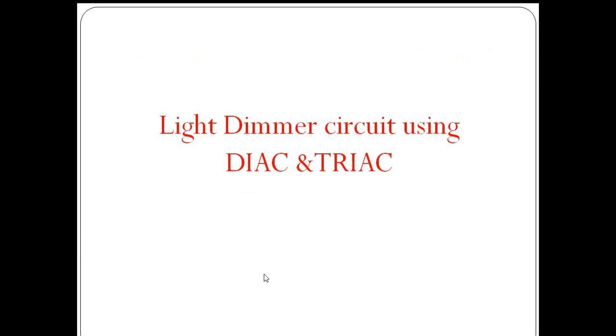A light dimmer changes the intensity of light. By using DIAC and TRIAC, we send the required voltage to the lamp. By changing or adjusting the voltage to the lamp, the intensity is controlled. We will discuss how it operates using the DIAC and TRIAC circuit in this video lesson.